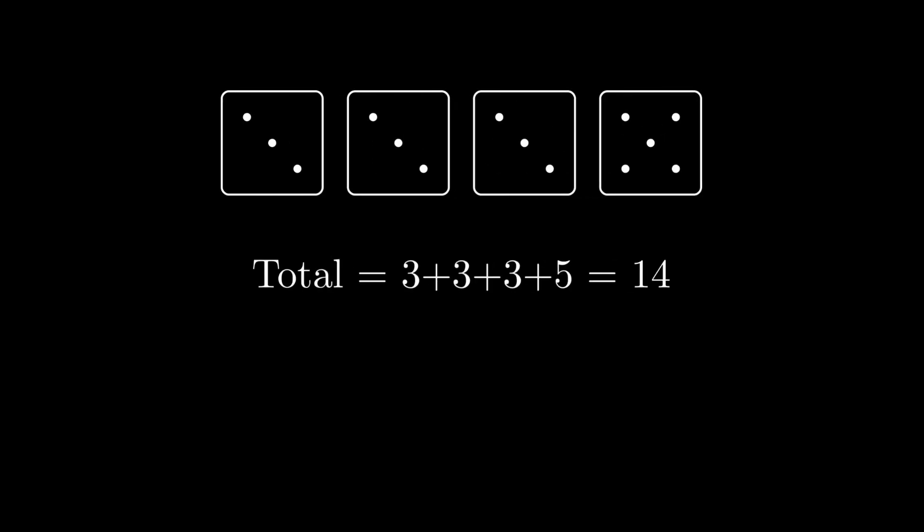We are interested in the total of all the rolls. For example, in this case, the total is 10. Similarly, for this roll sequence, the total is 14. So, what is the expected total sum of all dice rolls? Pause the video here if you want to give it a try.